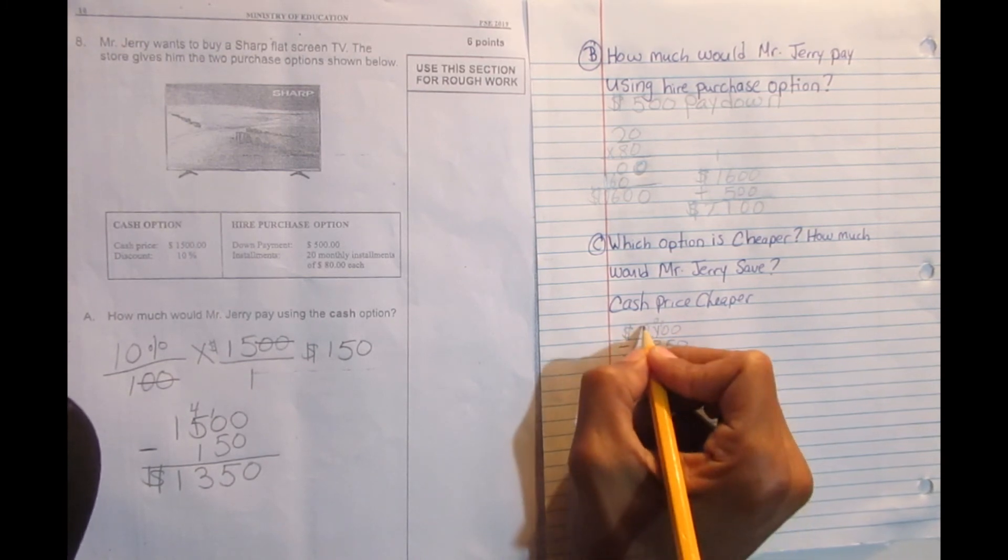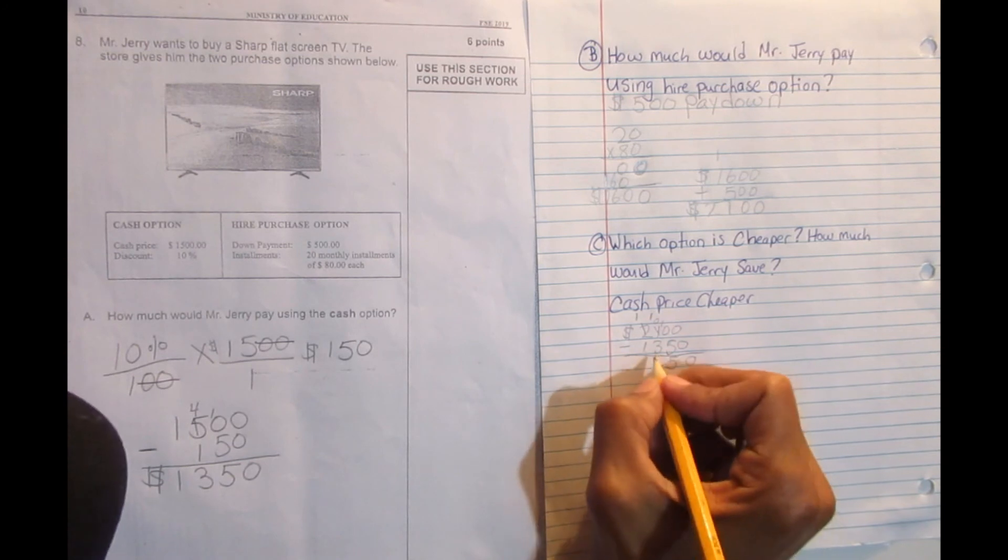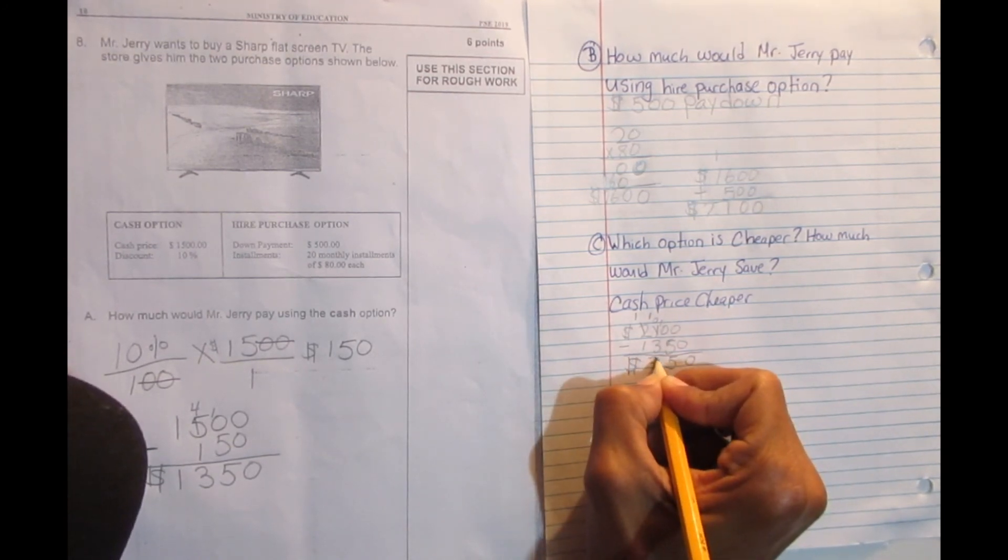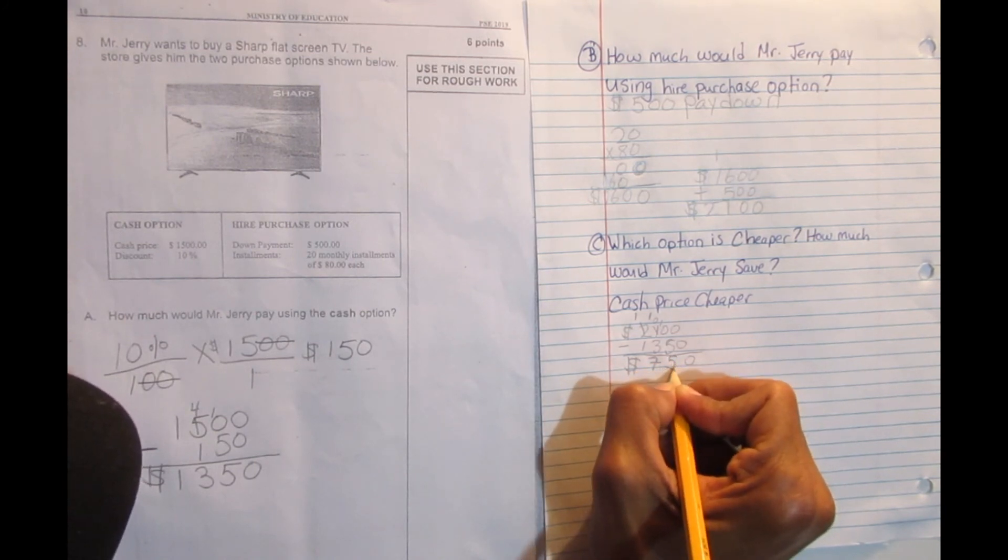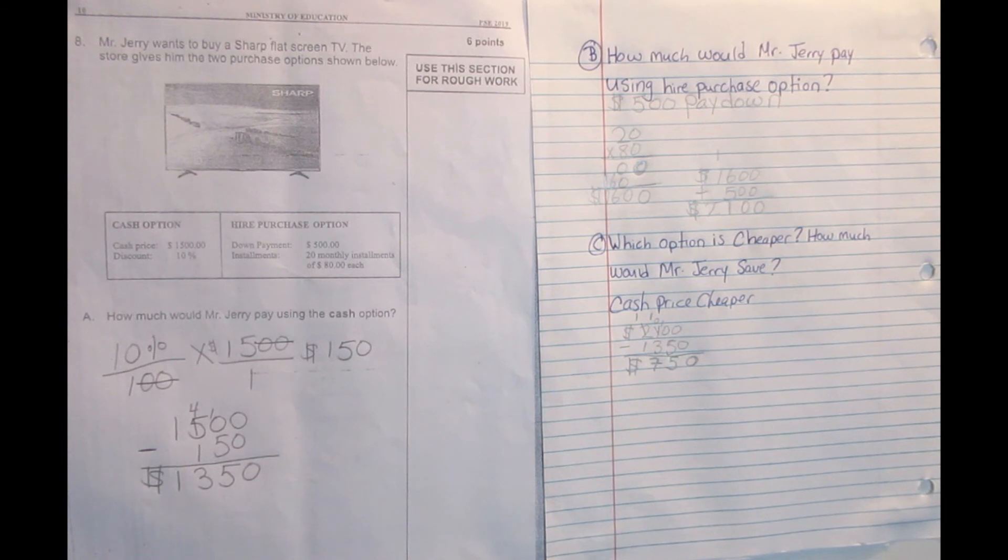Then 0 take away 3 can't, borrow from the 2. The 2 becomes 1. This becomes 10. 10 minus 3 is 7. So I would save $750 if I would buy the TV cash compared to the hire purchase price.